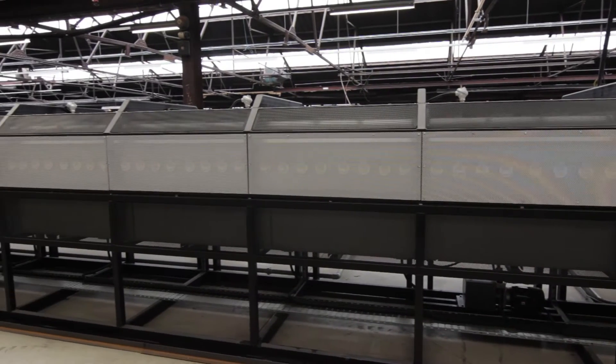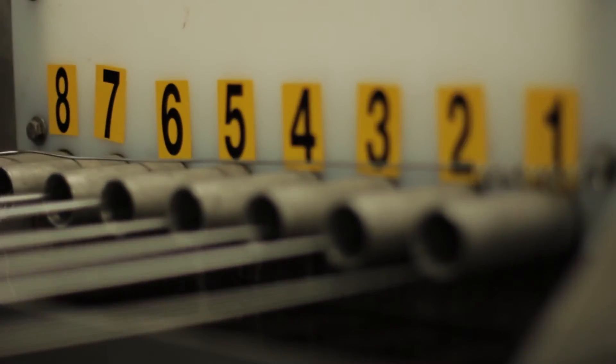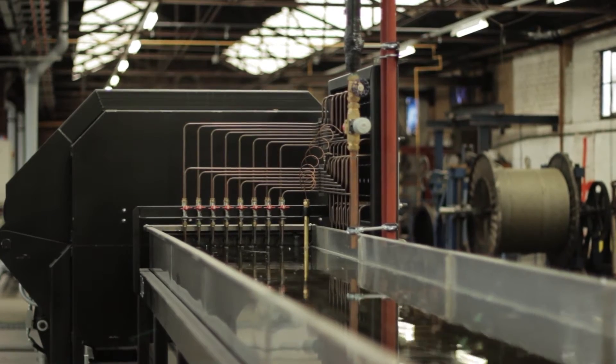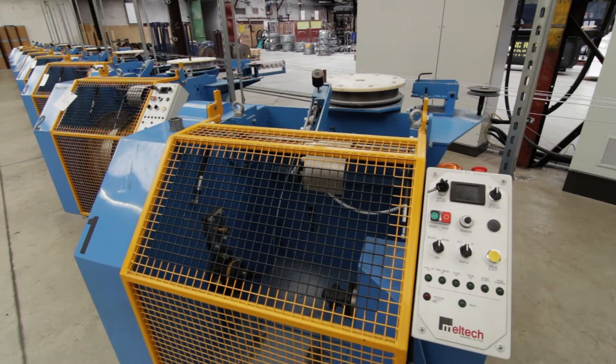Meltech have installed four strand and healing furnaces at Webster and Horsewool and this particular line comprises of an 8 tube furnace, cooling section, polymer coating tank, drying oven, and 8 precision spool take ups.